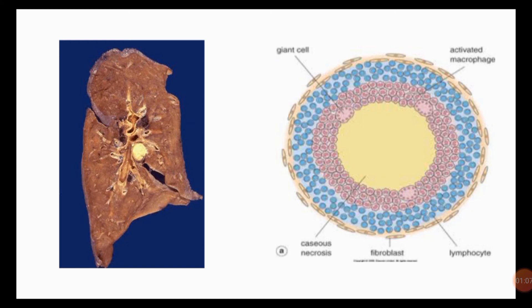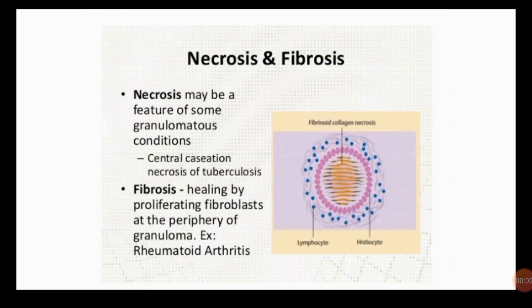As seen in the figures, the yellowish area in the lung is the caseous necrosis, and in another figure we can also see a yellowish caseous necrotic area.